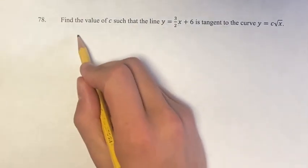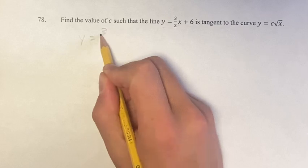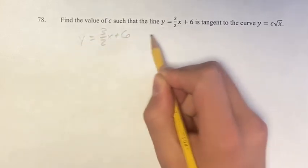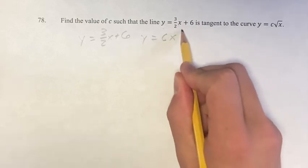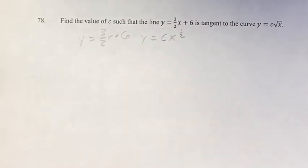So if we write these out next to each other, we can see that y equals 3 halves x plus 6 and y equals c root x, which we're going to write as x to the 1 half. We'll see why we're doing that in a second.